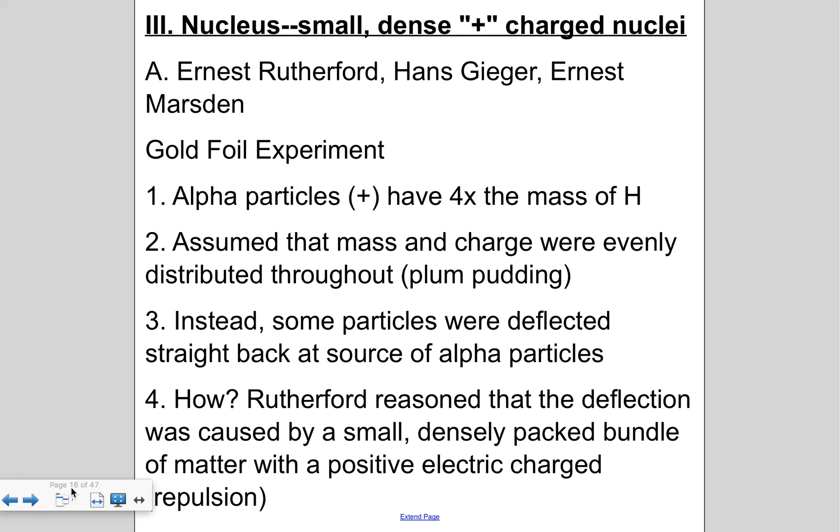So moving on to the nucleus: we know that it's small and it's dense and it's positively charged. So with the work of Ernest Rutherford, Hans Geiger and Ernest Marsden, they put together a gold foil experiment. Basically what they did was they bombarded a thin piece of gold foil with a narrow beam of alpha particles. Now these alpha particles have a positive charge, four times the mass of hydrogen, and they assumed that the mass and charge were evenly distributed throughout going back to JJ Thompson's plum pudding model.